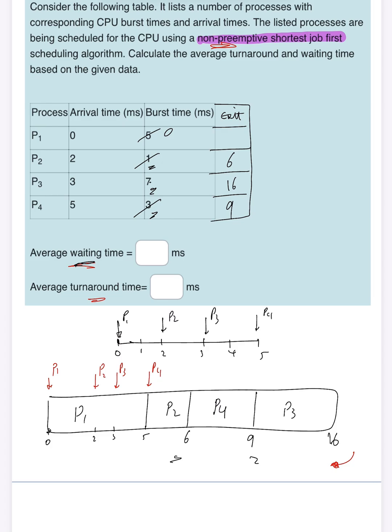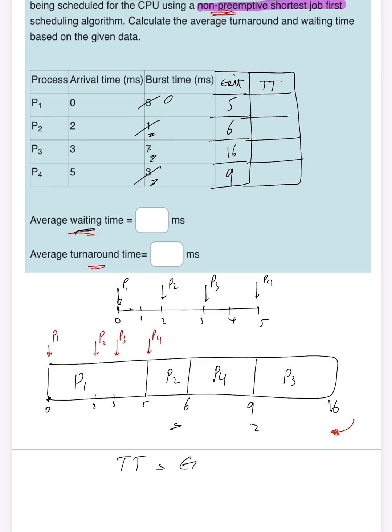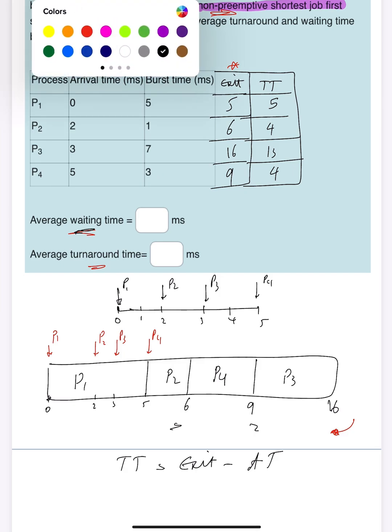The next column that I need is turnaround time. Turnaround time, by definition, is exit time minus arrival time. It means I need to subtract these two columns. So exit minus arrival: 5 minus 0 is 5, 6 minus 2 is 4, 16 minus 3 is 13, and 9 minus 5 is 4.